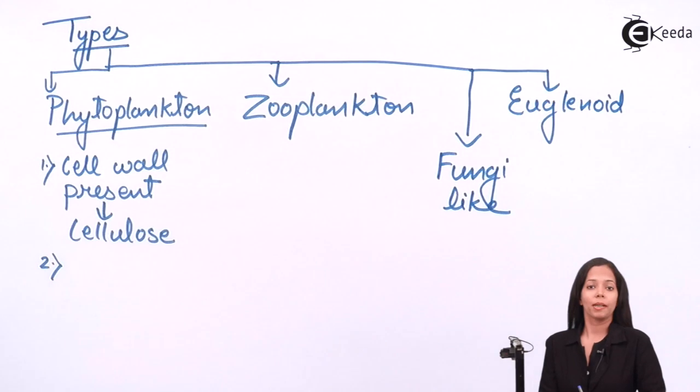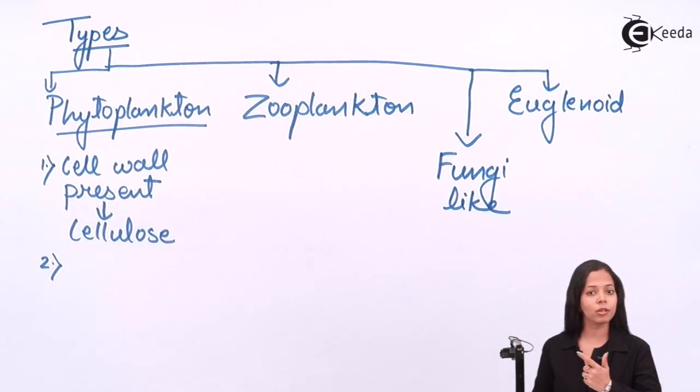If cell wall is present in phytoplanktons, they are made of cellulose. Another feature similar to plants is presence of chloroplast. If chloroplast is present, photosynthesis will be carried out. Any organism who carries out photosynthesis has their own food, so they are called autotrophs. Phytoplanktons have chloroplast, they carry out photosynthesis, so they are autotrophs.